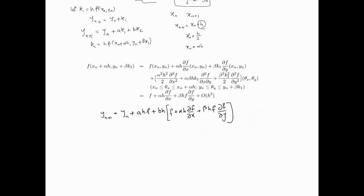So our method is now order h cubed using this particular formulation. The problem we notice is: what are FX and FY, and what are the values of α, β, A, and B? Let's try to see how we can sort this out. To compare like for like, we look at the exact solution — as seen in the earlier error analysis video — and expand y(xn+1) as a Taylor series.